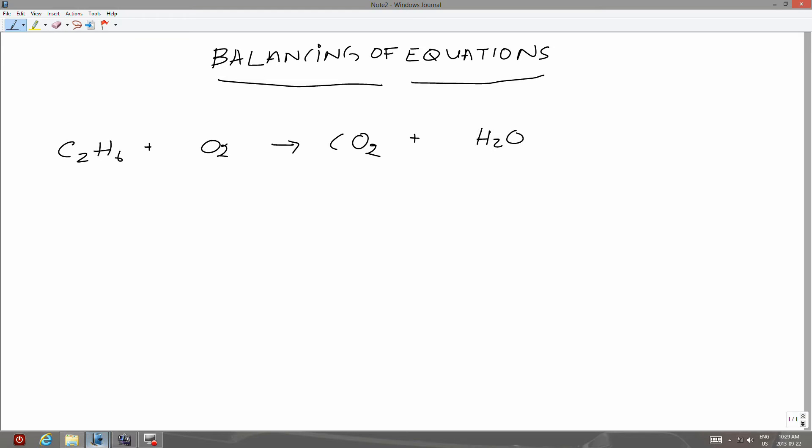This is a skeleton equation we are going to balance. It is a reaction between ethane and oxygen. So the reaction is a combustion reaction. Now there are three elements on the reactants and three elements on the products of which they form two compounds.